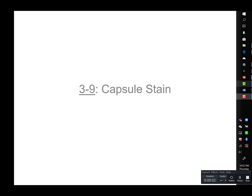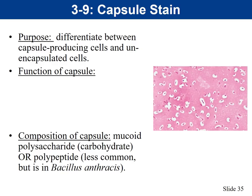In this video, we're going to cover the capsule stain, which is activity 3-9. The purpose of a capsule stain is to differentiate between capsule-producing cells and unencapsulated cells, meaning this allows us to visualize or differentiate between cells that make capsules and those that don't. We call these a differential stain — they differentiate between different types of cells.